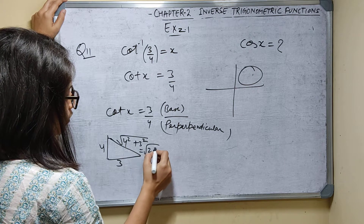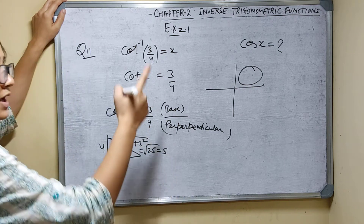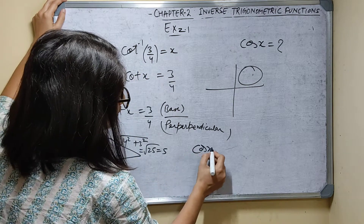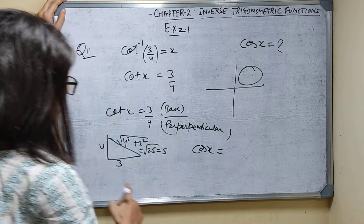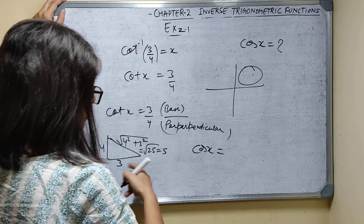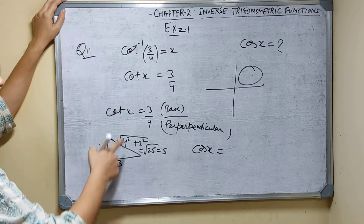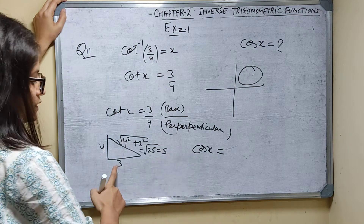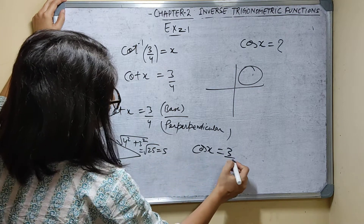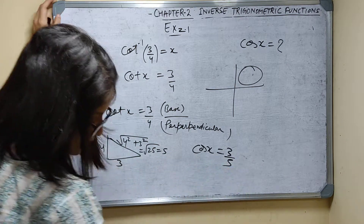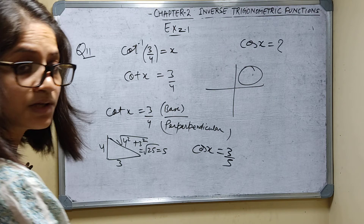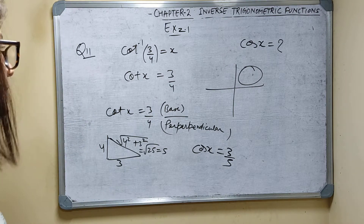They are asking for cos x. Cos x is base by hypotenuse, so cos x is equal to 3 by 5. This is the answer: cos x equals 3 by 5.